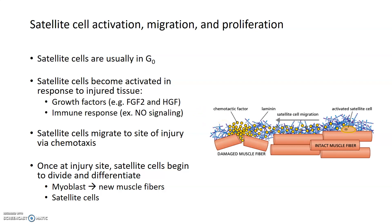Once at the injury site, satellite cells begin to divide and differentiate. Most satellite cells become what's known as a myoblast, and then ultimately differentiate further into new muscle fibers to replace the damaged tissue. But satellite cells also need to repopulate themselves, so some will regenerate into new satellite cells that can be used to heal subsequent damage. The mechanism by which satellite cells divide and decide whether to become a muscle fiber or a satellite cell is not well understood, but they are important in both repair and maintenance, as well as regeneration of muscle tissue.